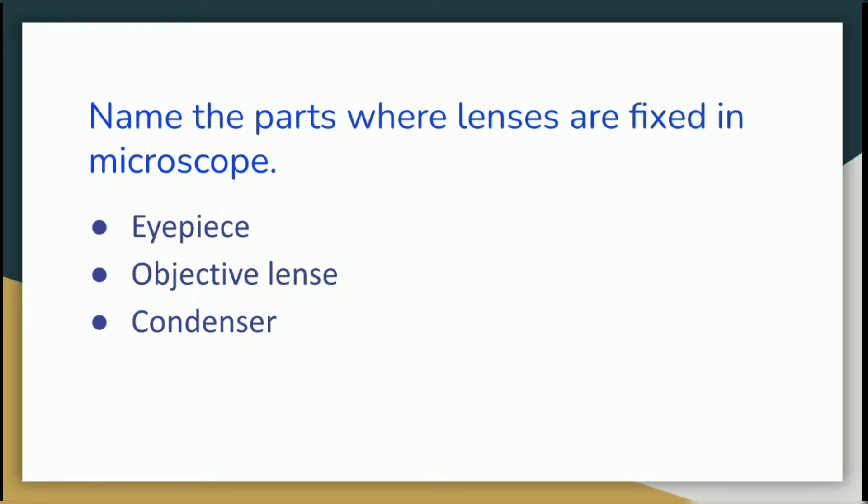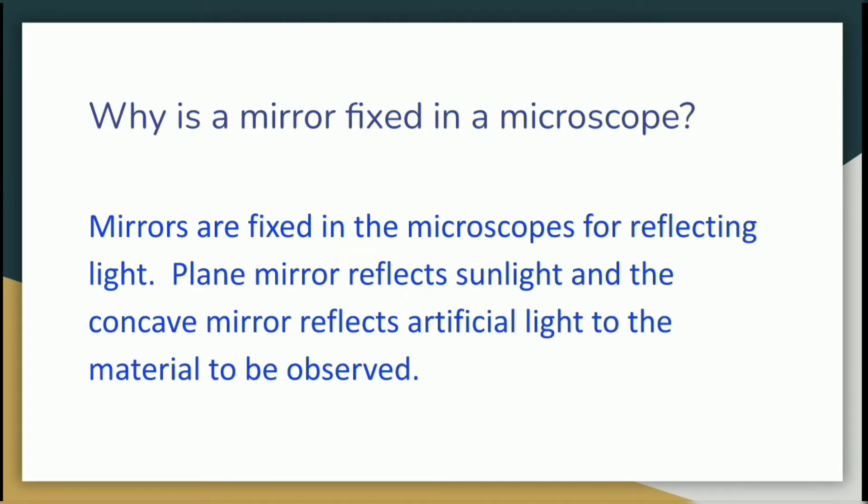Name the parts where lenses are fixed in microscope: eyepiece, objective lens, condenser. Why is a mirror fixed in a microscope? Mirrors are fixed in the microscopes for reflecting light. Plane mirror reflects sunlight and the concave mirror reflects artificial light to the material to be observed.